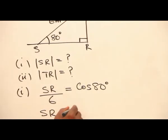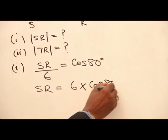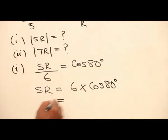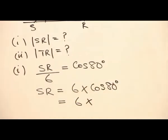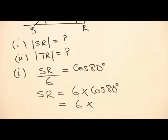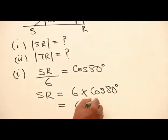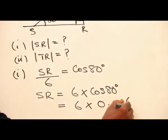Therefore, SR is equal to 6 multiplying cos 80 degrees. You can find the value of cos 80 using your calculator, or you can find it directly from your four-figure table. That will be equal to 6 times 0.1736.